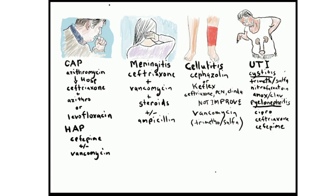Third is cellulitis. For mild cellulitis, PO Keflex, penicillin-VK, dicloxacillin, or clindamycin can be used. For moderately severe cellulitis, IV cefazolin is effective. You can also use ceftriaxone, penicillin, or clindamycin. Oxacillin-nafcillin is no longer recommended. If the infection does not improve, you can switch to vancomycin. And if the patient is on an oral regimen, you can try trimethoprim-sulfamethoxazole before initiating IV vancomycin.